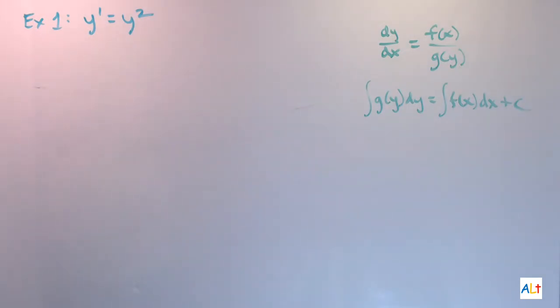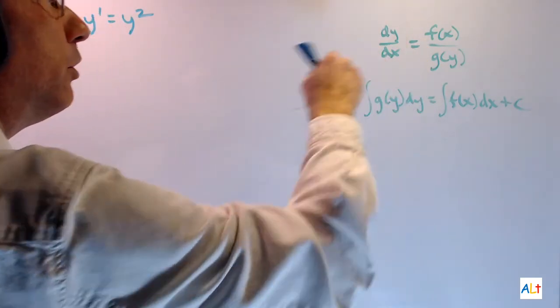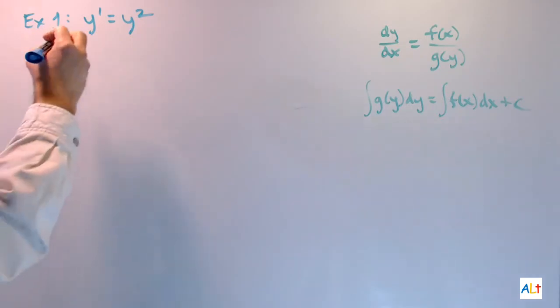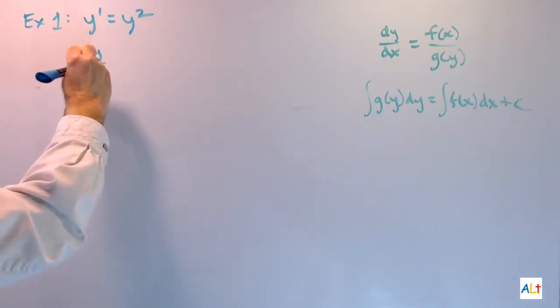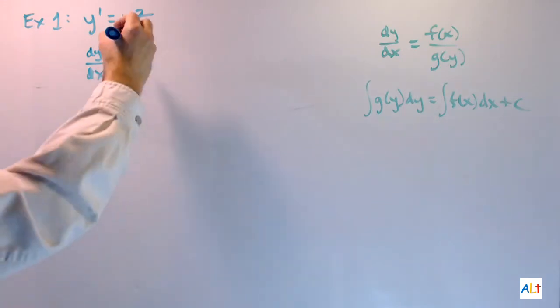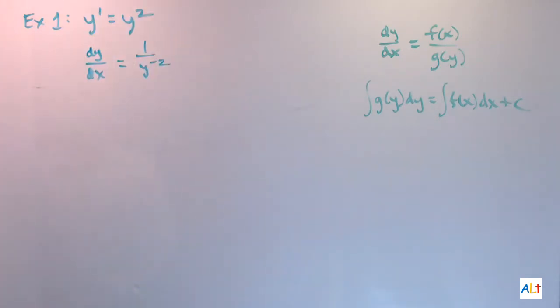So here's the first example. At first glance, it does not look like we have a function of x, we only have a function of y. But we can take care of that. y prime is dy/dx, and then this right side is just equal to that, 1 over y^-2. If you don't see a function of x, you can just say the function of x is equal to 1. So now we're going to separate the variables. And you always can do that just by cross-multiplying. Now we are ready to integrate.